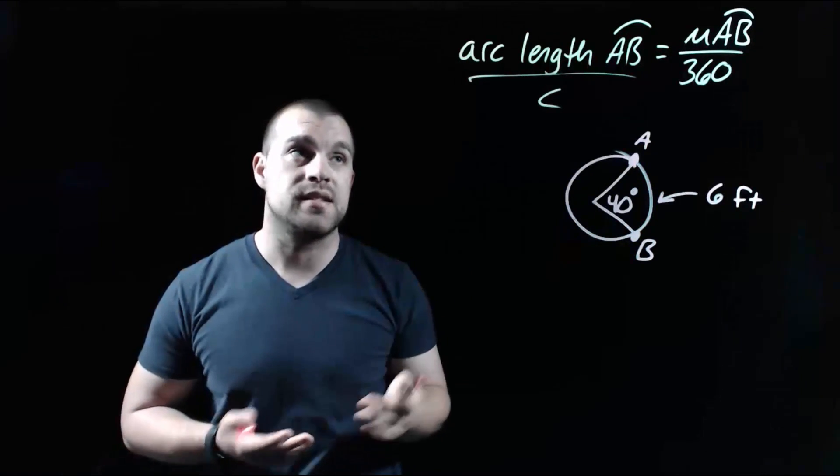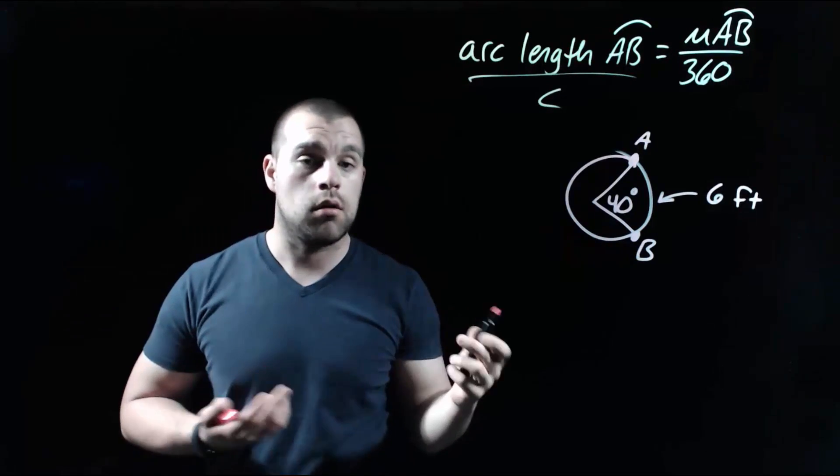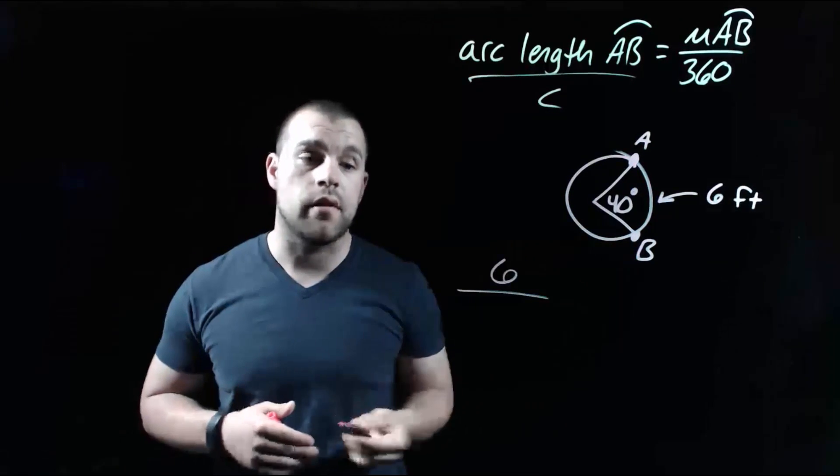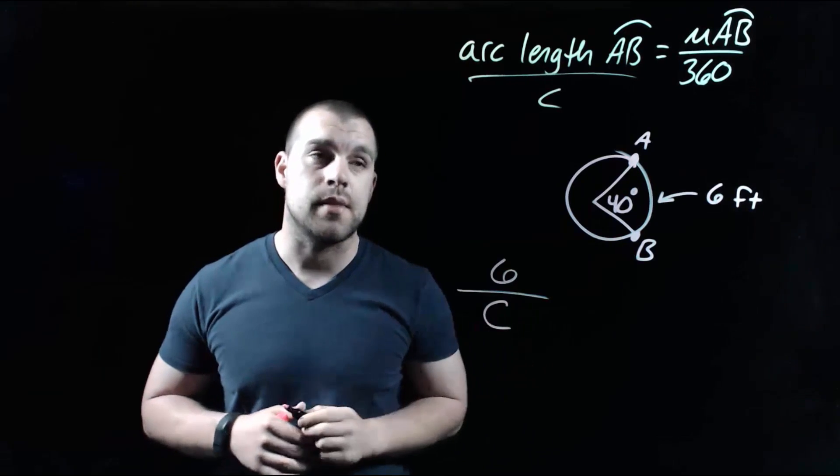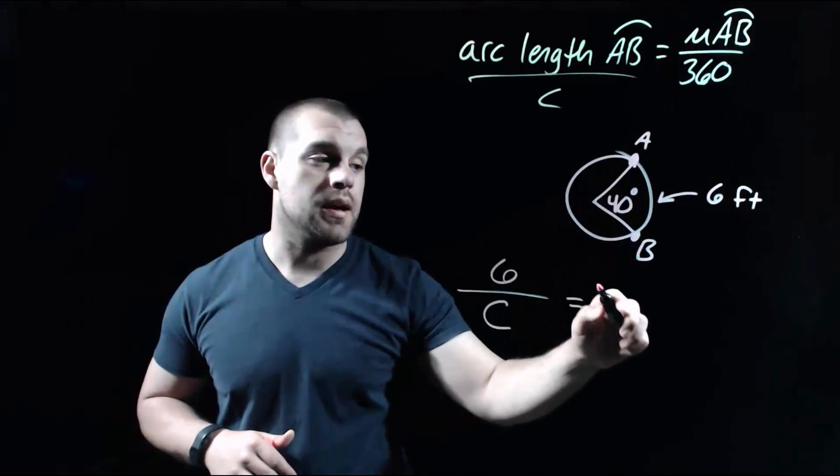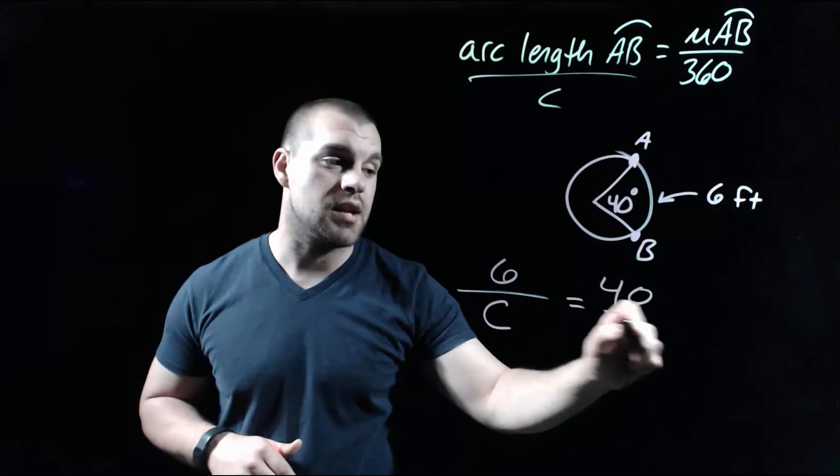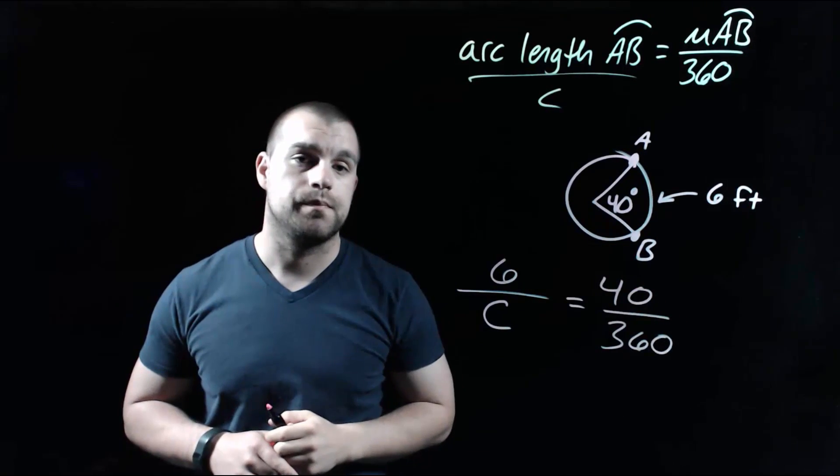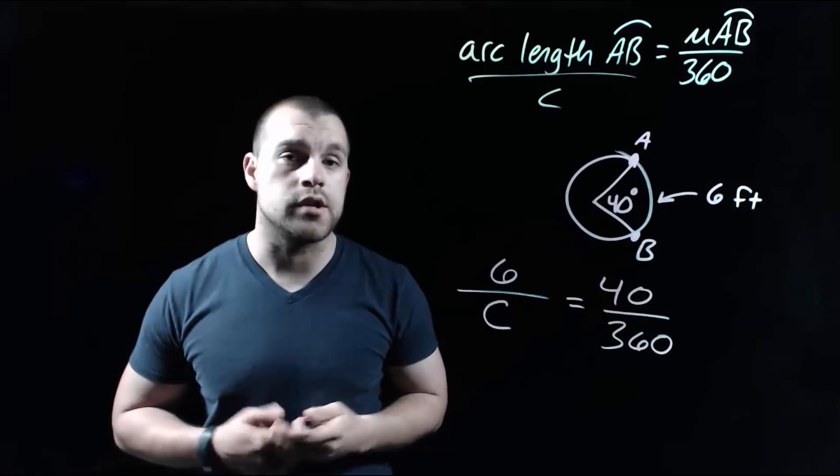We know three of those pieces of information. We know that our arc length is six over, we're going to try to figure out what the circumference of our full circle is. So I'm going to leave the C on the bottom of this fraction, equals the measure of the arc AB is the same as that 40 degree central angle over a full 360 degree circle.